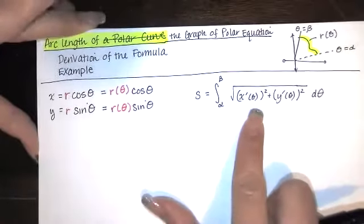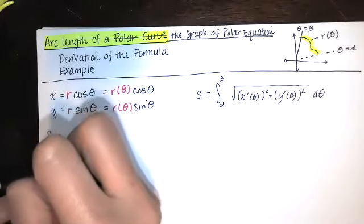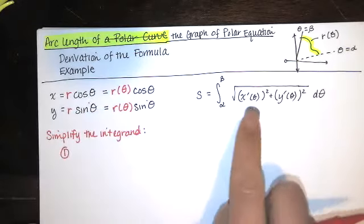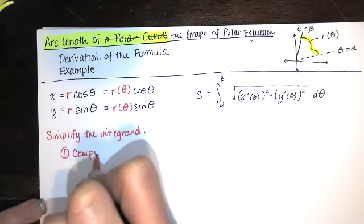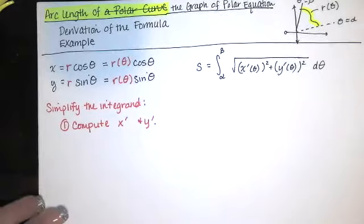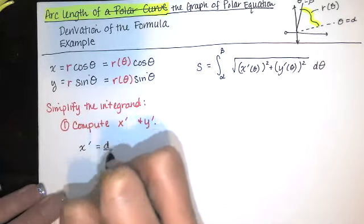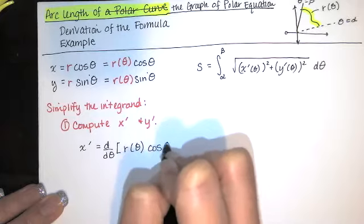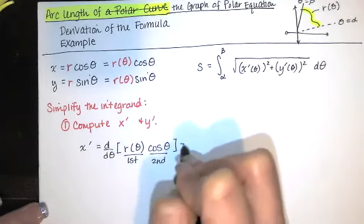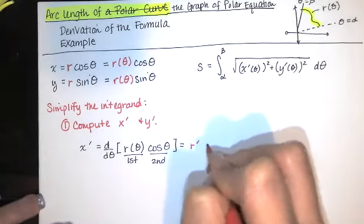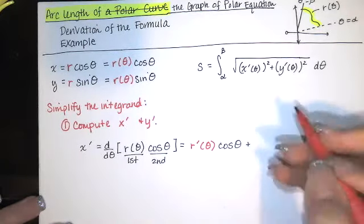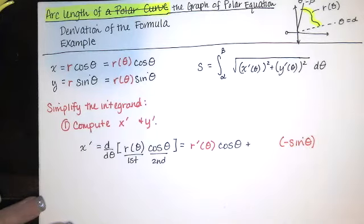So in order to simplify this integrand, we need to compute x prime and y prime as functions of theta. Since r depends on theta, x prime is the derivative with respect to theta of r(θ) times cosine of theta. This requires the product rule — r(θ) is our first function and cosine of theta is our second. According to the product rule we get: derivative of the first, which is r prime of theta, times the second, cosine of theta, plus derivative of the second, which is negative sine of theta, times the first, which is r(θ).